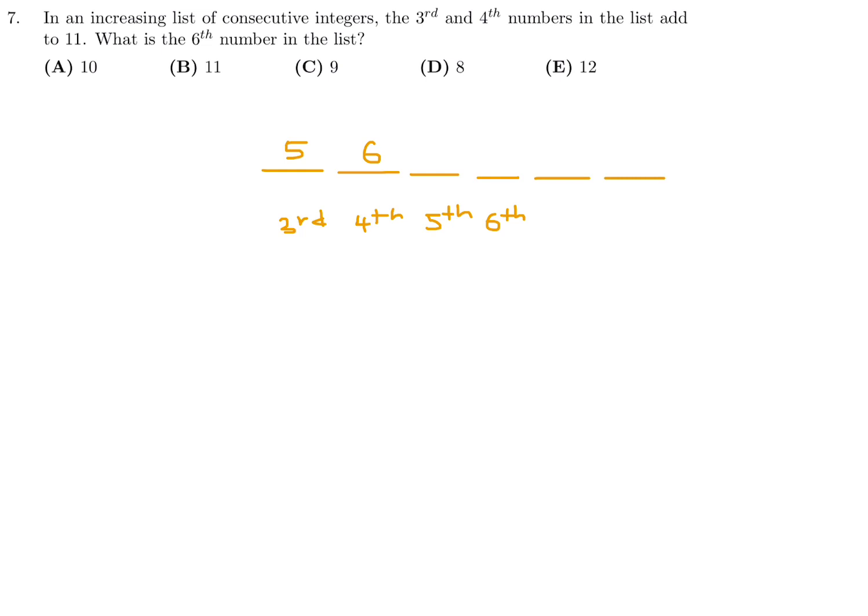Those are two consecutive numbers that add to 11. And in this list, they want you to figure out the sixth number. Well, if you keep going and making this list, it's 5, 6, 7, 8, and so on. And the sixth number, of course, is 8. So number 7, the answer is D.